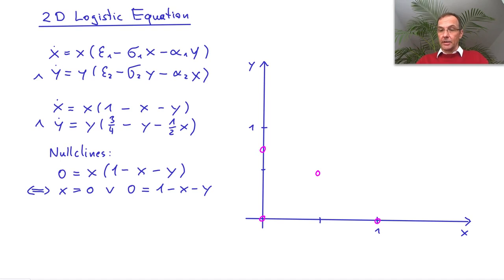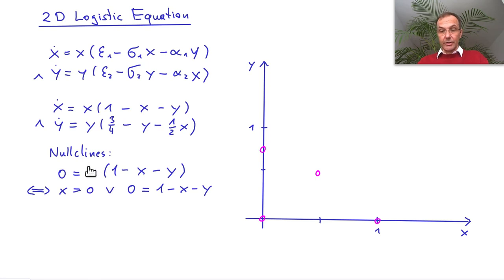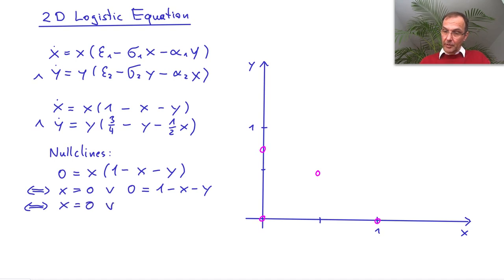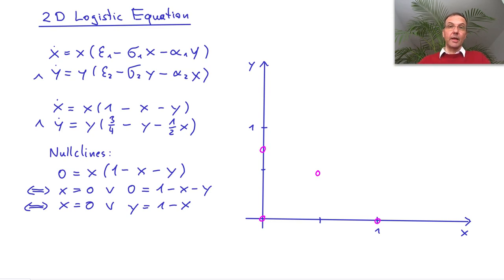The x nullcline derives from the differential equation for x. We set this to zero, and now there are two solutions. The first is either x is zero, which is the first factor, or the second factor is zero. And we can rewrite this by saying simply y equals one minus x. Likewise, for the y nullcline, we set y dot to zero, which comes from the second equation.